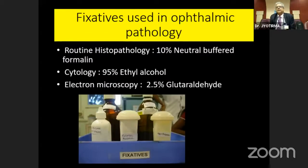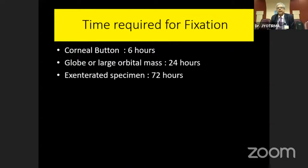The fixatives used in ophthalmic pathology: routine histopathology uses 10% neutral buffered formalin; cytology uses 90 to 95% ethyl alcohol; electron microscopy uses 2.5% glutaraldehyde. Fixation times: corneal button — 6 hours; globe and large orbital mass — 24 hours; enucleated specimen — 72 hours.